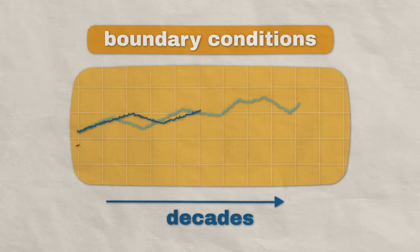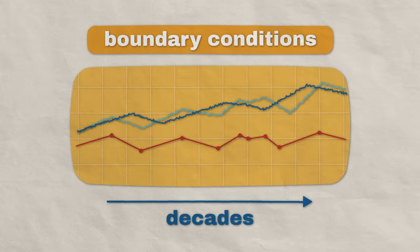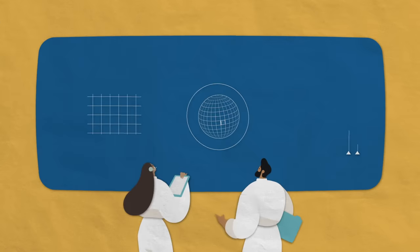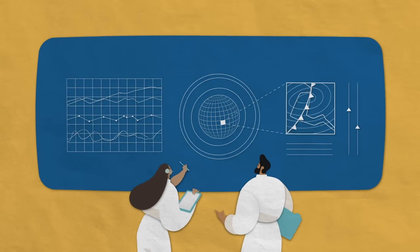Most boundary conditions have well-defined values that change slowly, if at all. This allows researchers to reliably predict climate years into the future.